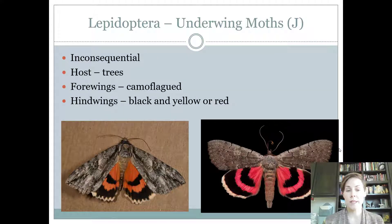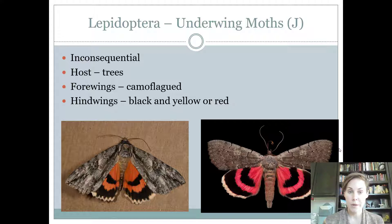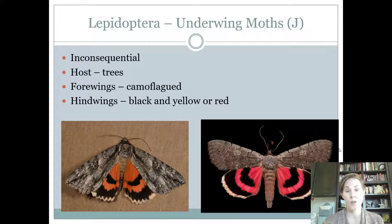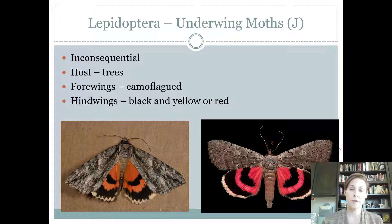The underwing moth is the one that people sometimes confuse for an armyworm — it's not an armyworm. Look at the bottom of the wings: they're bright in color — pink, orange, or red — not white like an armyworm. These guys are also considered inconsequential, just found feeding on trees. The four wings are camouflaged, and if a predator like a lizard came close, this moth might open up its wings to startle it, giving itself enough time to fly away.